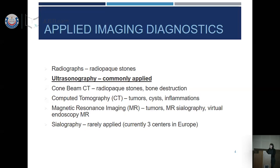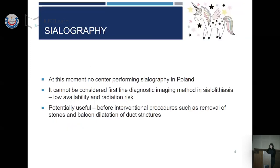In cone beam computed tomography, you can observe calcified structures like salivary stones, as well as bone destruction and tumors. It demonstrates lesions in bone and salivary gland stones, and also allows imaging of soft tissues — hence it's applied in tumor cysts and inflammations. For magnetic resonance imaging, it's based mostly on visualization of soft tissues, so it's applied mostly in advanced cases such as tumors and cysts. We can also perform MR sialography or virtual endoscopy. Sialography — contrast imaging of salivary glands — is not so commonly applied.